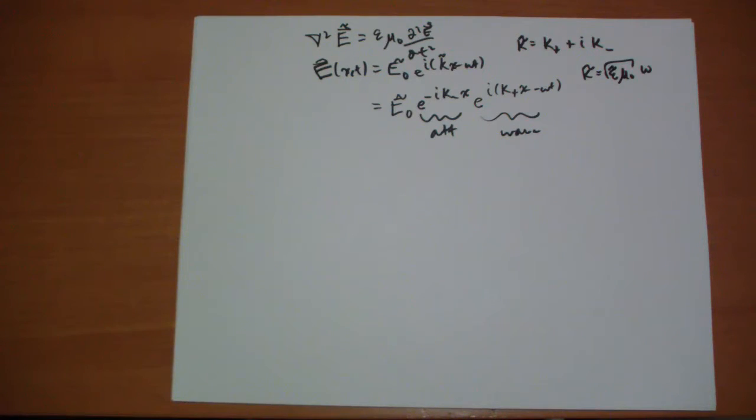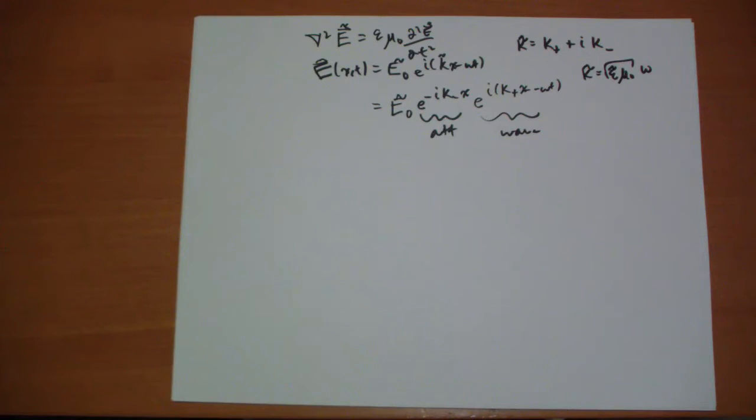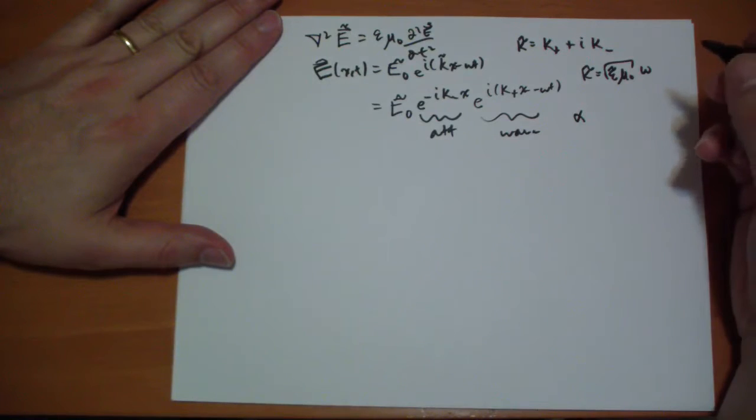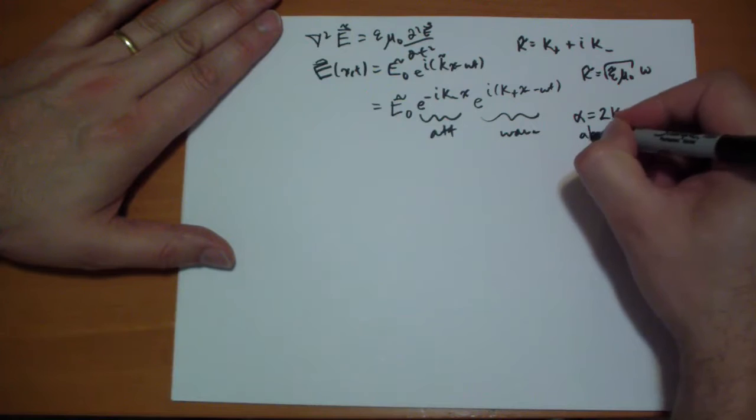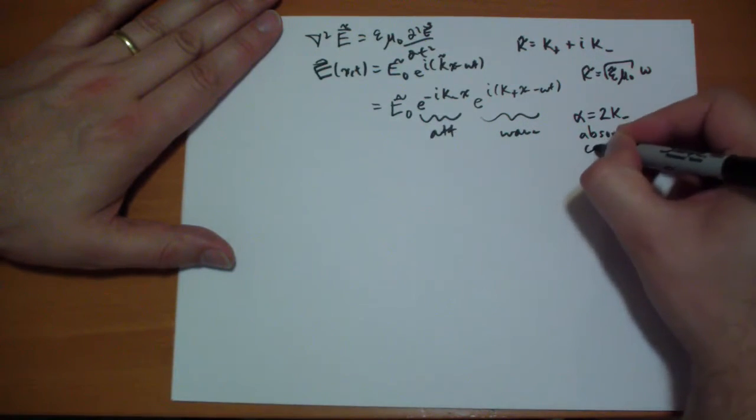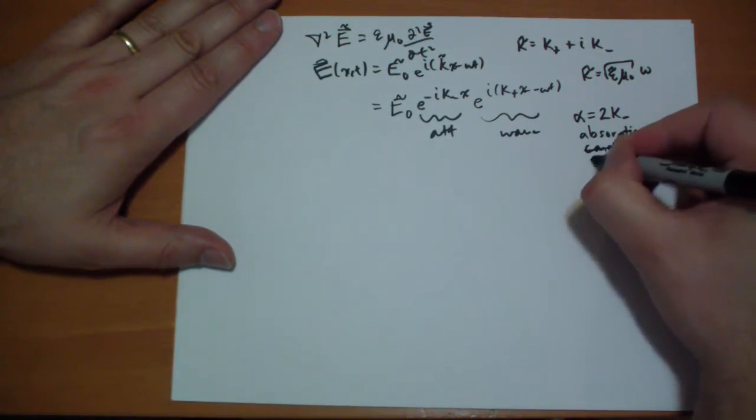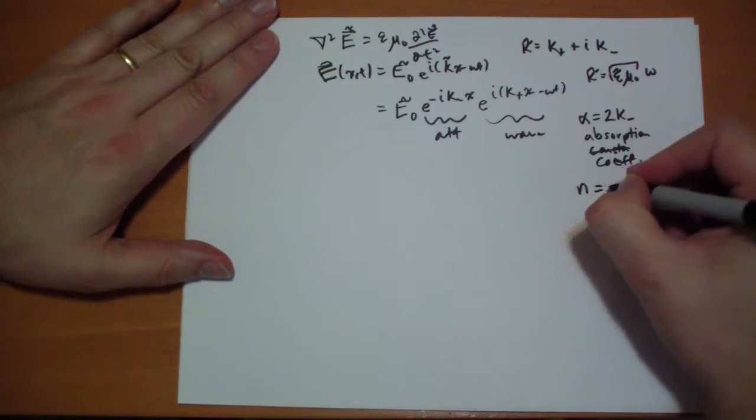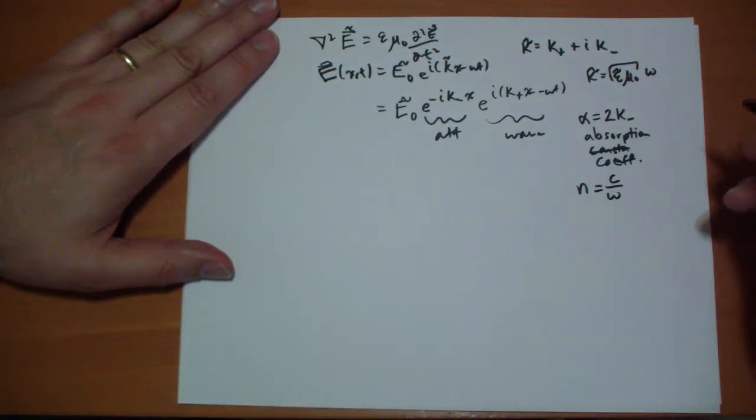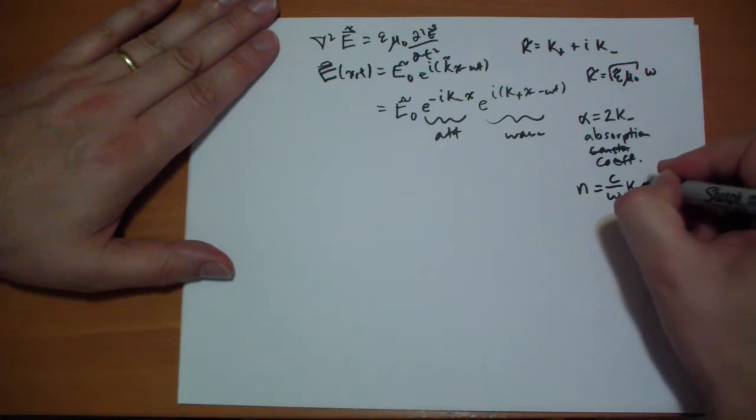One-third happens when we have alpha, we're going to call that absorption constant. We're just going to define that as 2 kappa minus. That's the absorption constant, coefficient. See, this is what happens when I stay up late at night. The index of refraction depends on the frequency. That's the kappa plus part that we have there. And that's just going to be n is equal to the speed of light divided by omega times kappa plus.